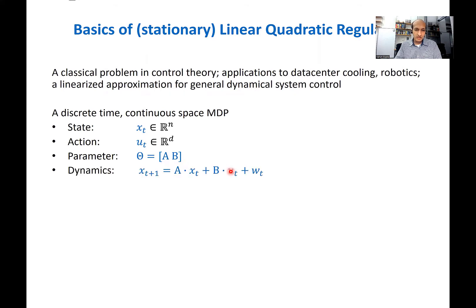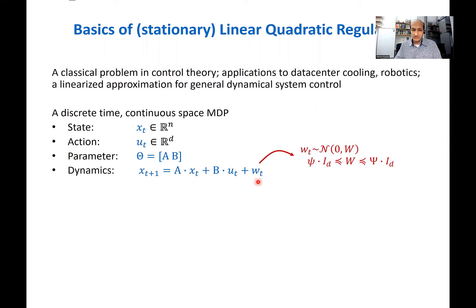A and B enter the picture through the dynamics. If my current state at time t is Xt, and the action I take at time t is Ut, then the state at time t+1 is given by a linear function of the current state and action, plus some noise Wt — that's why it's called linear dynamics. The assumption we'll make is that the noise Wt is Gaussian, normal with some known covariance matrix W, whose eigenvalues are lower and upper bounded by constants.